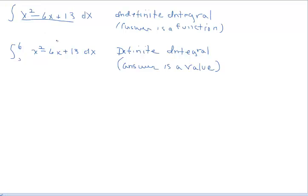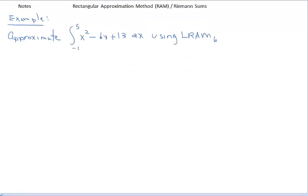With an indefinite integral we find an antiderivative. With a definite integral we also find an antiderivative, but we do something further with it because of the limits. The title of the notes is Rectangular Approximation Method — RAM — Riemann Sums. In this example, we're asked to approximate the value of the integral of x squared minus 6x plus 13 from negative 1 to 5.